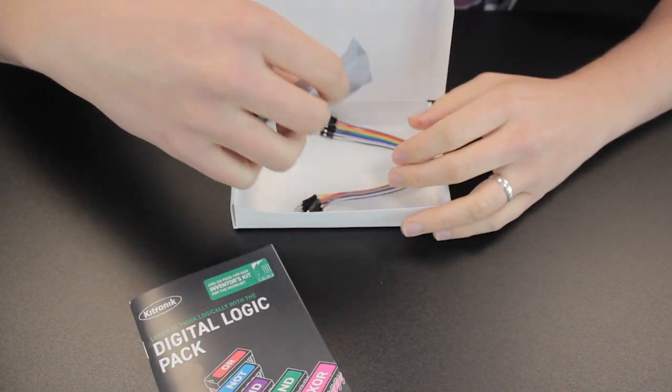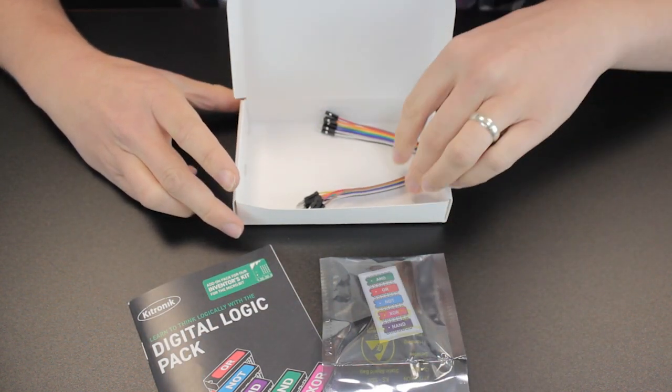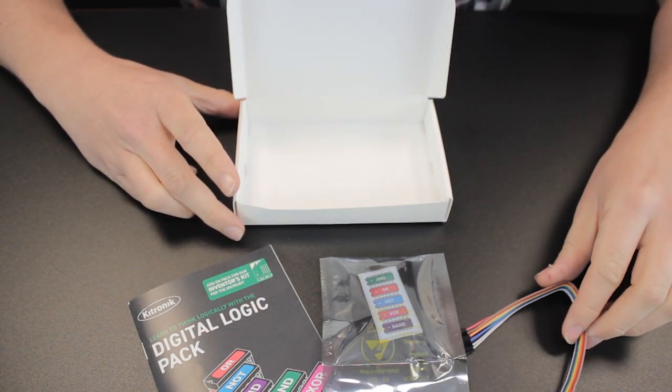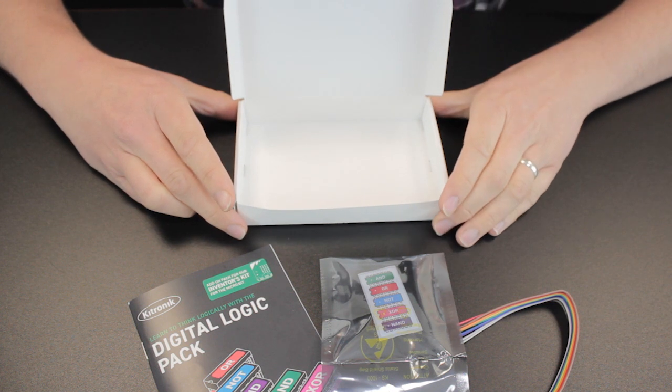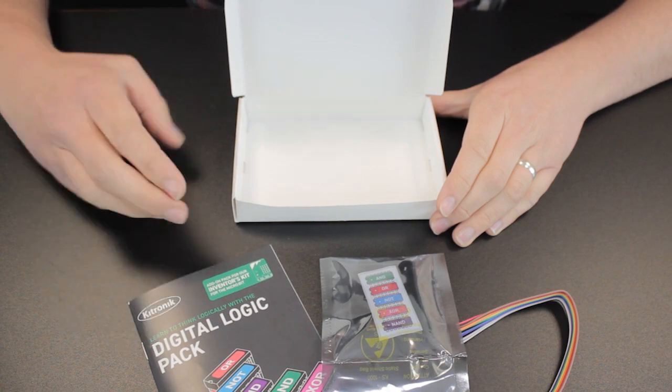It also comes with five Logic Gate ICs and two transistors and ten male-to-male jumper wires which will be used in conjunction with the components in the original Inventors Kit for building all the circuits found in the booklet.